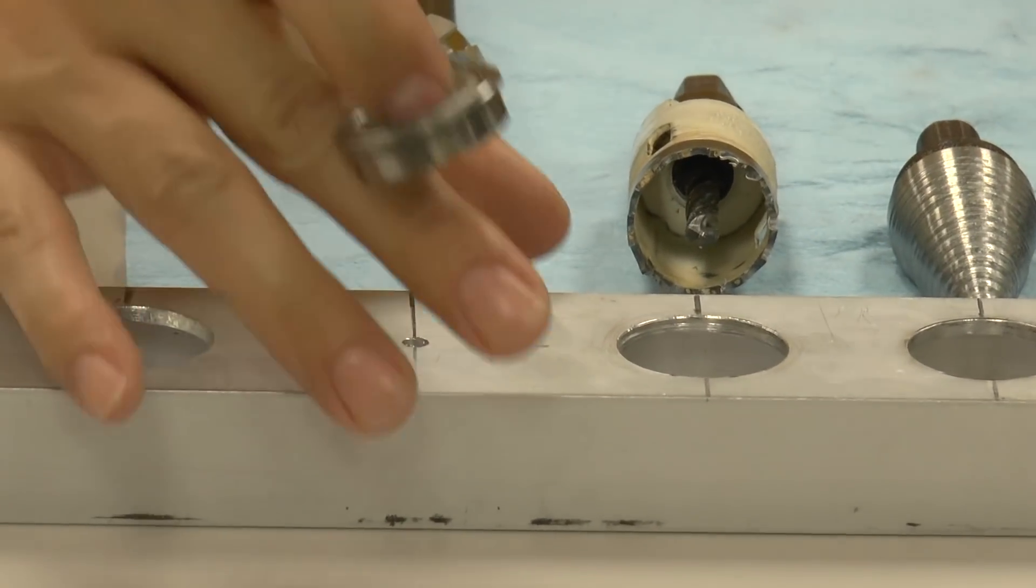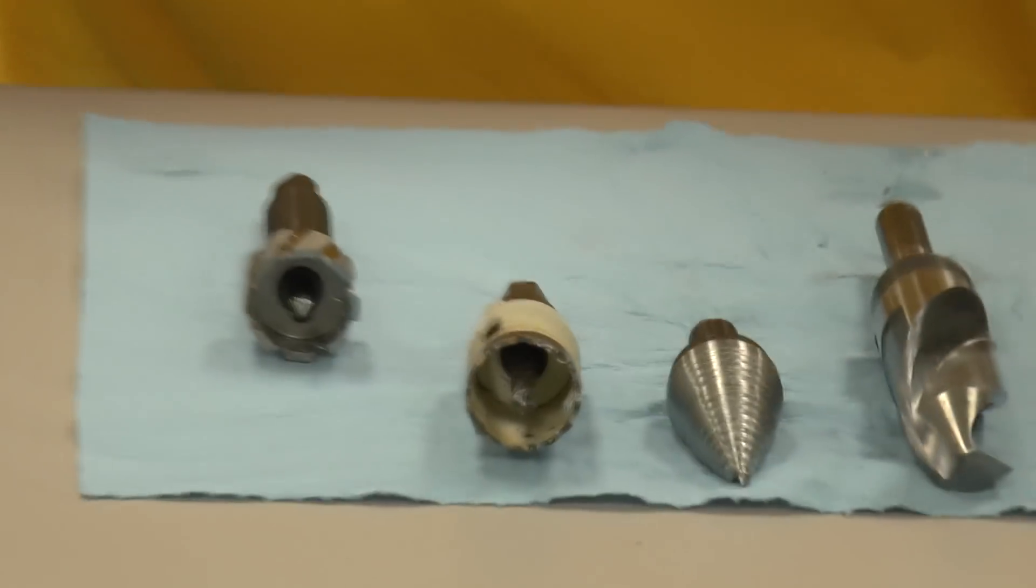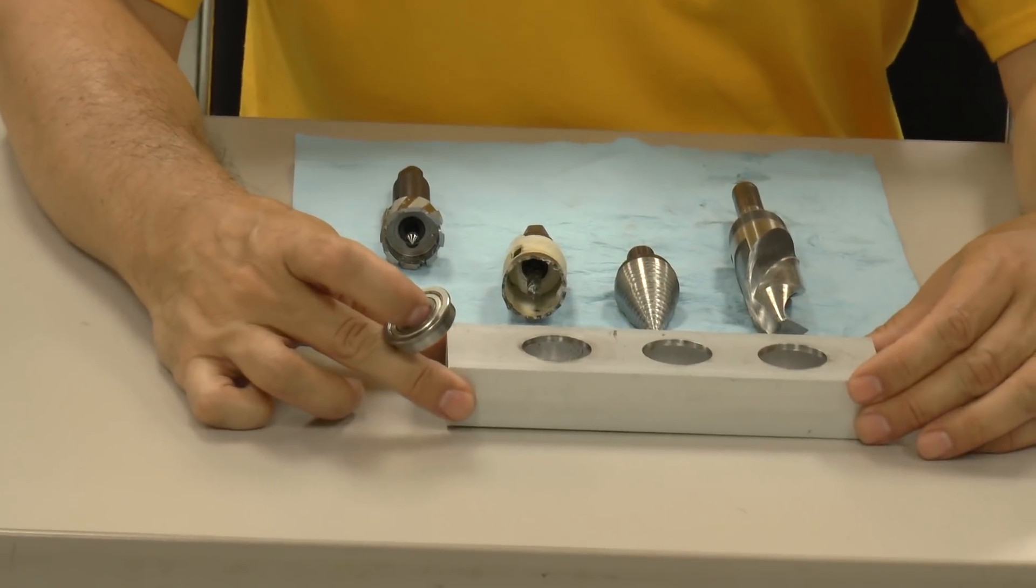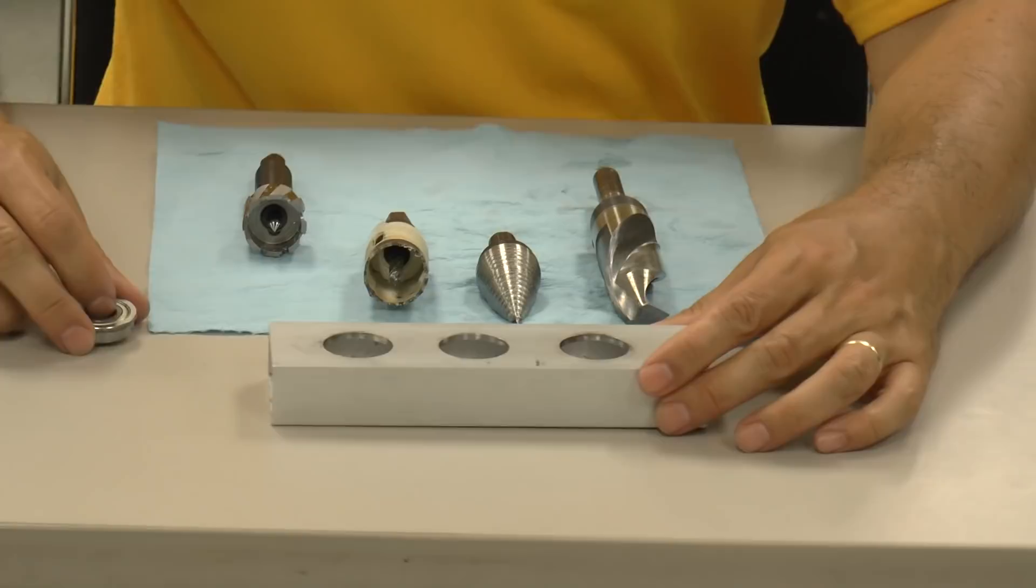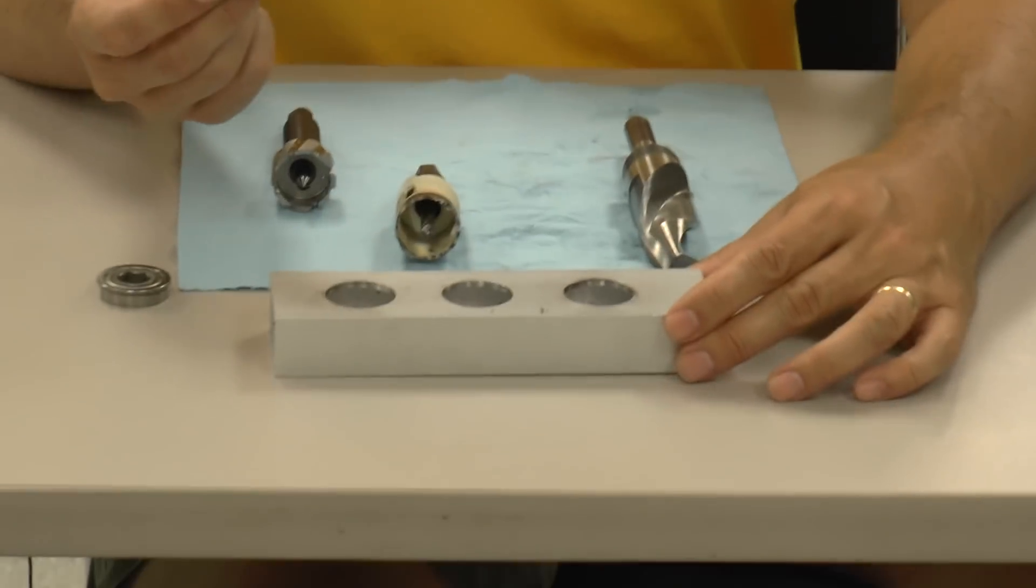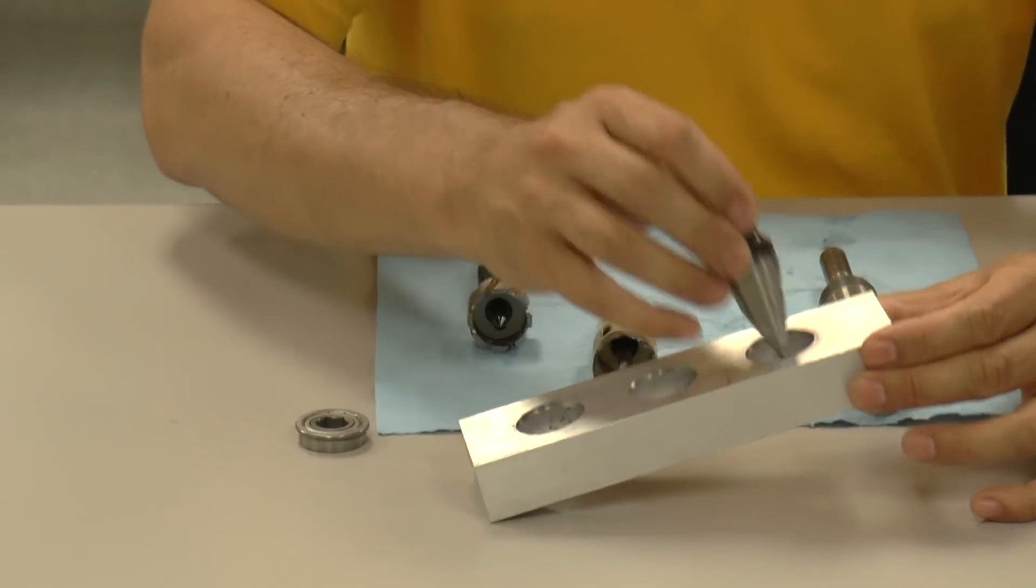After we did that test piece, this was the test piece that we used. We went ahead and did another test with the spiral drill bit. And that's what this one is.